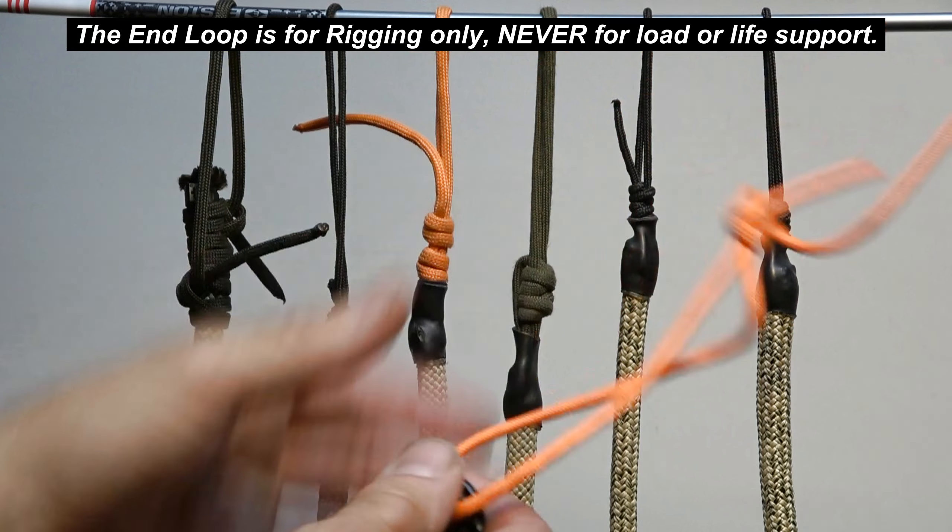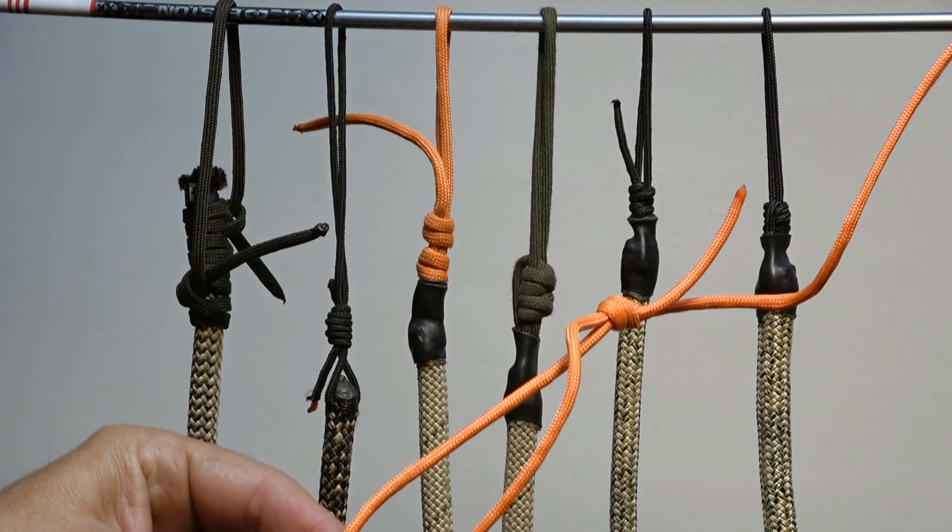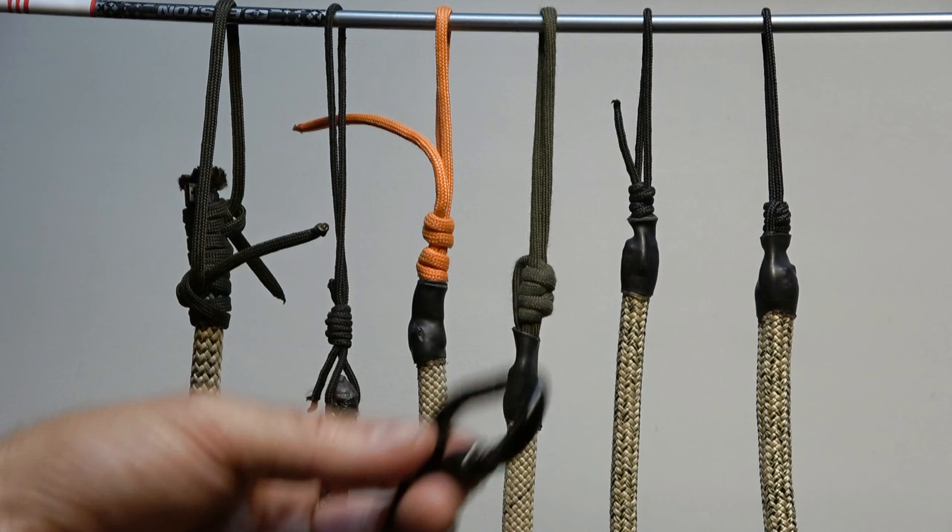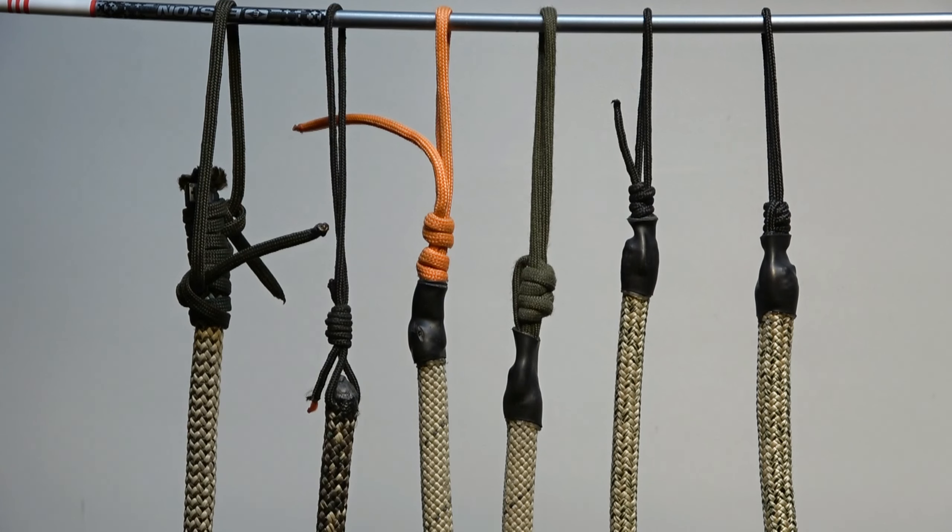Even when we're trying to get the rope not just through a tree crotch but when we're trying to get it through something as challenging as a floating anchor, the JRB end loop always works.